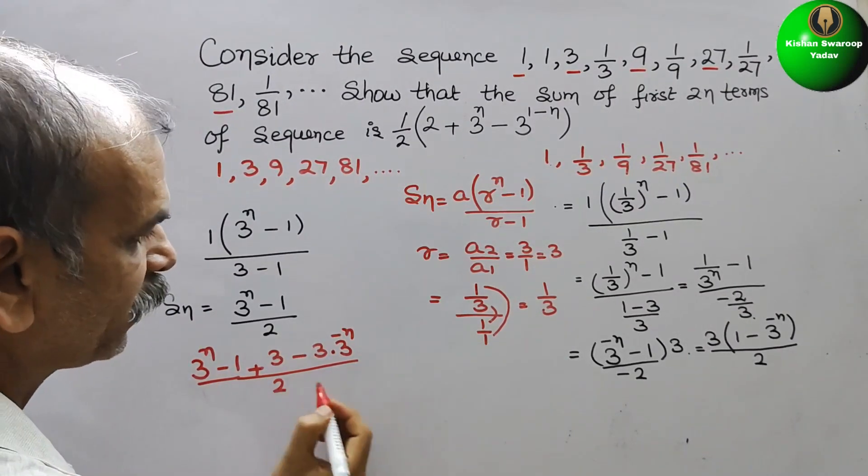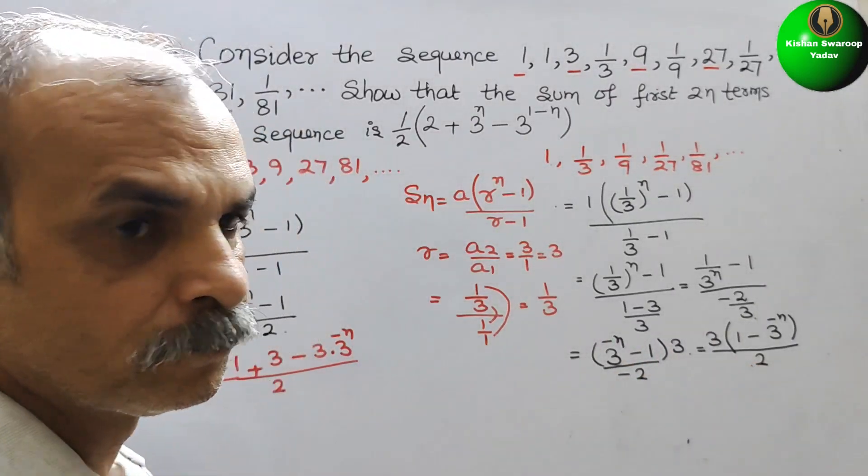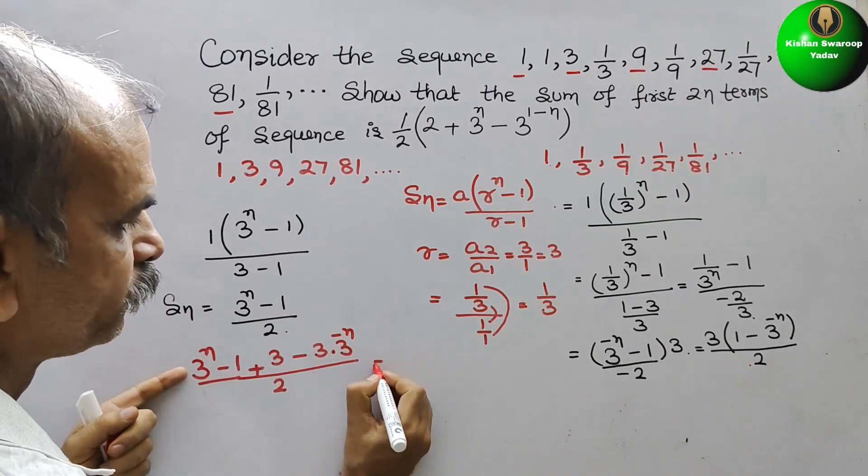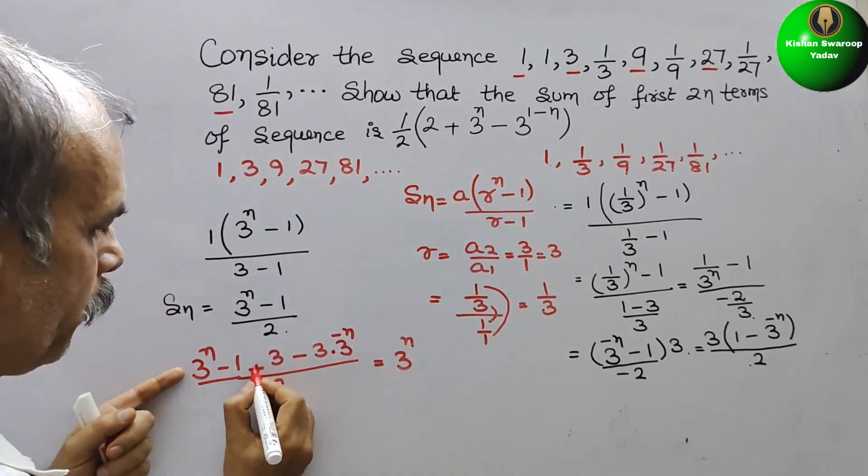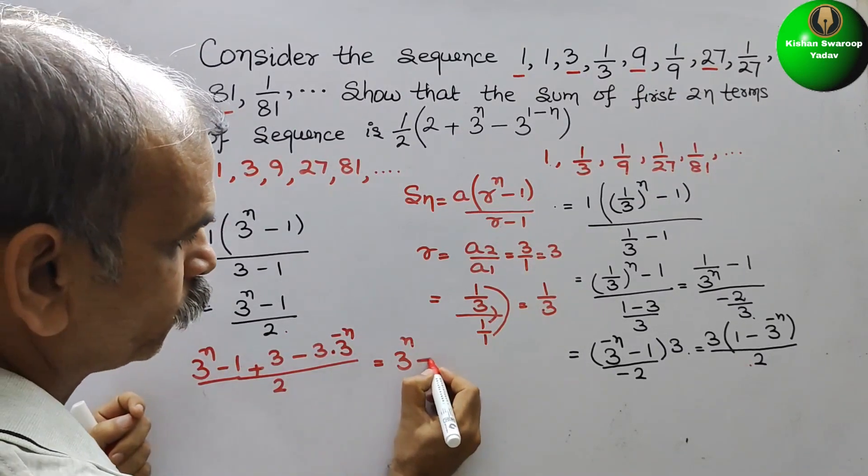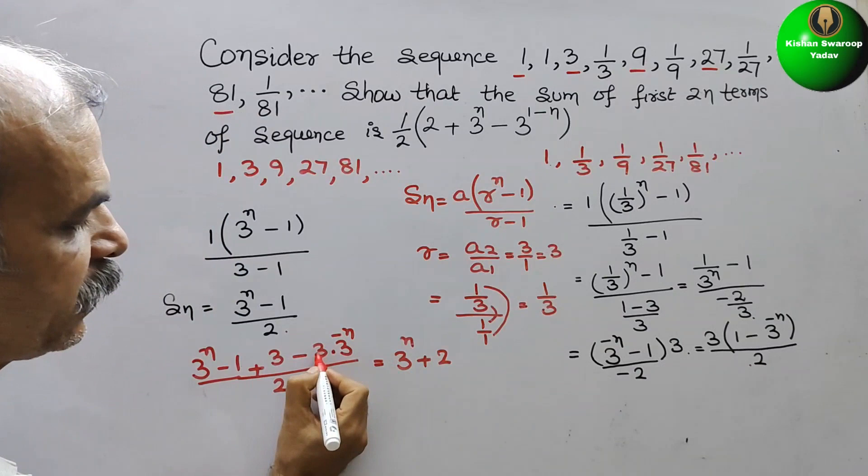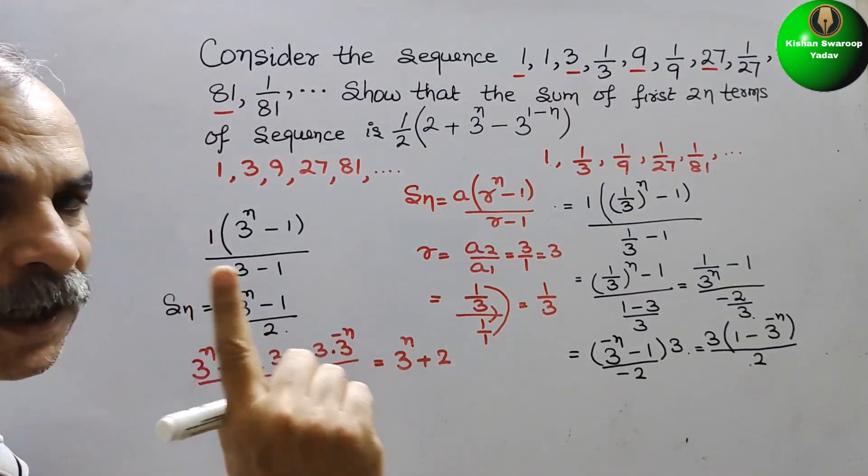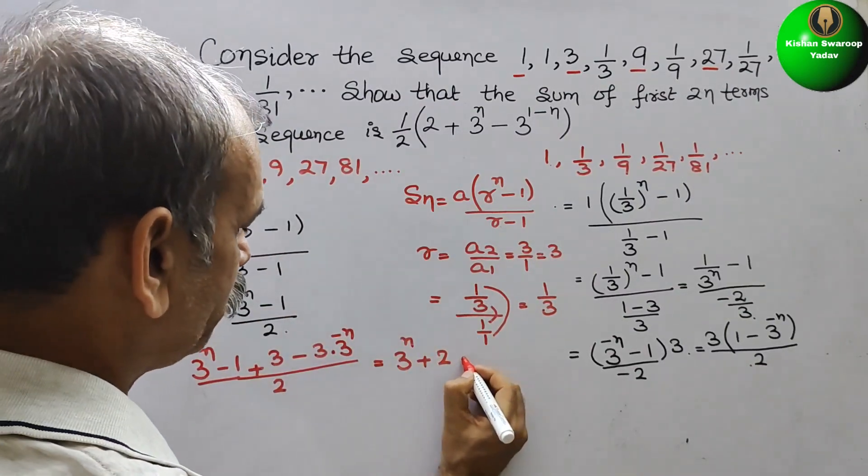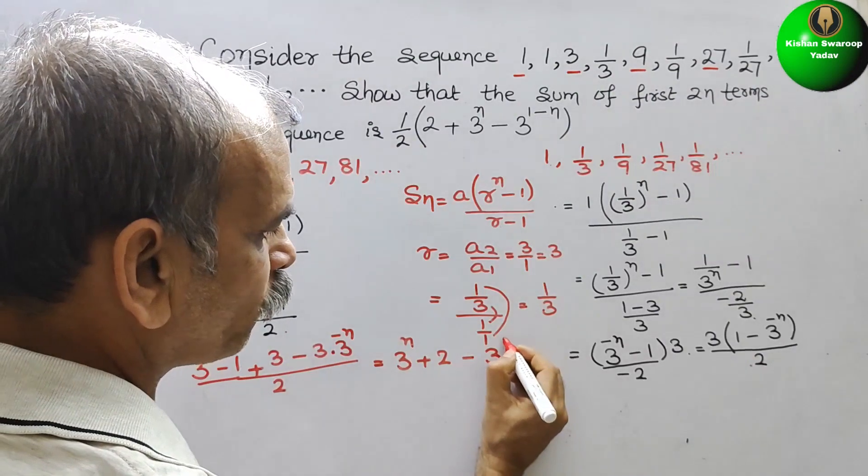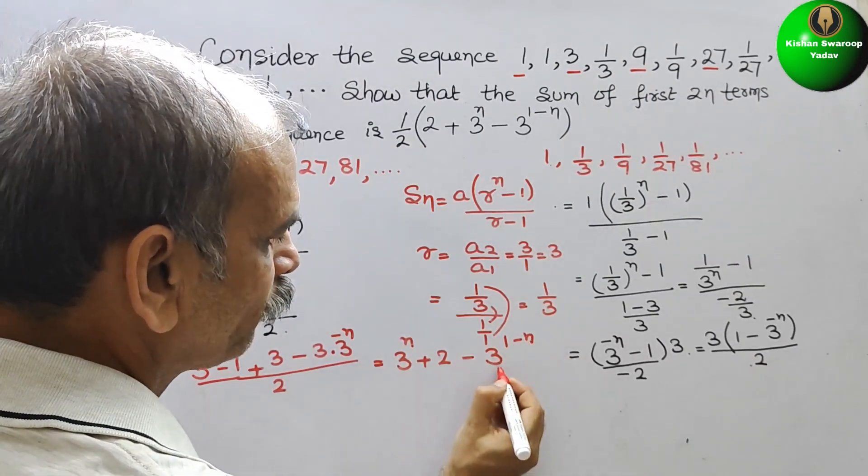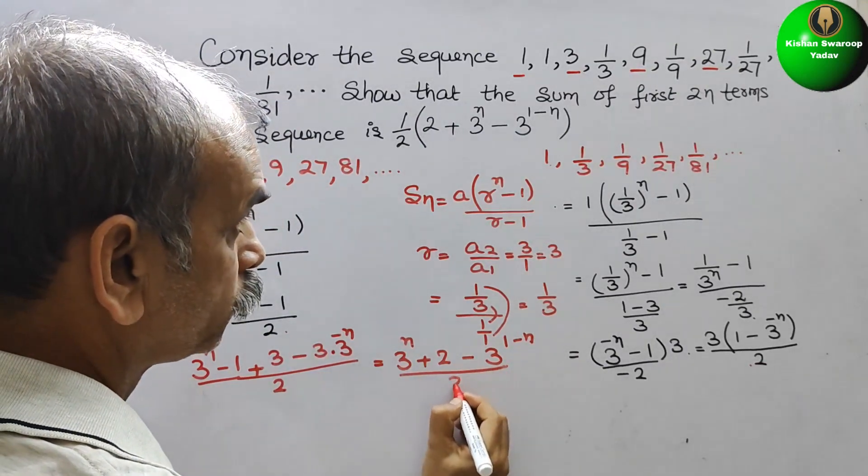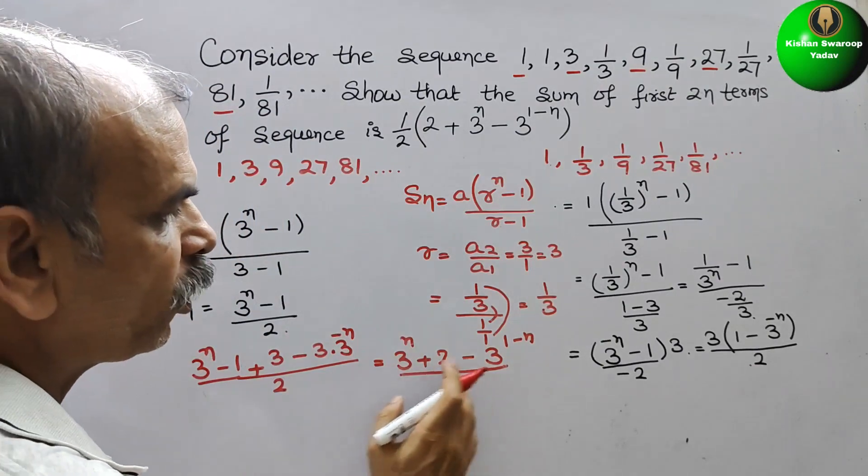This 2 will be LCM. Both are the same. Now you can see, what it will be? 3^n - 1 + 3 is plus 2, and this 3 times 3, that means the power here it will go at 1 + 1. So now it will be minus 3^(1-n) by 2.